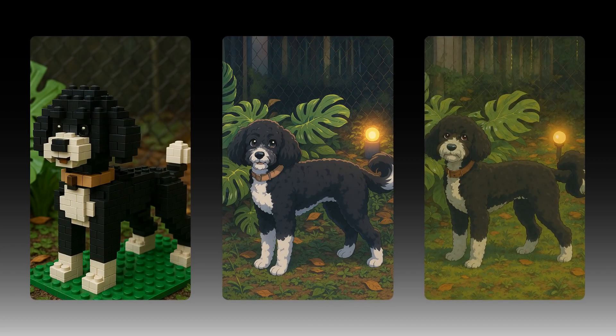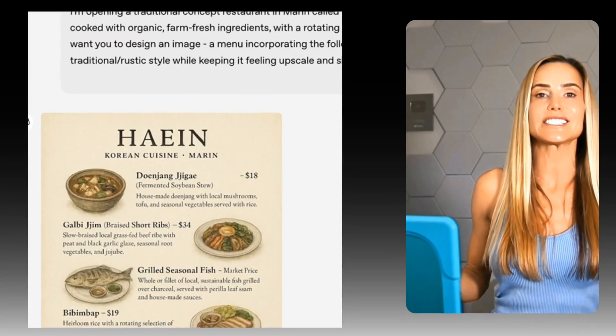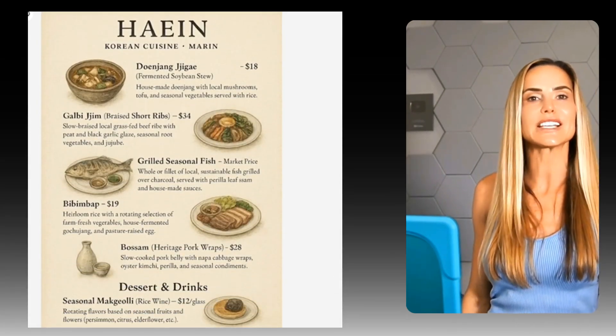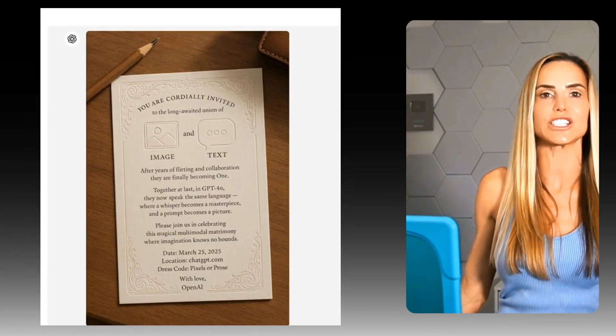You can use terms like 'make it more like the original,' 'remove the background,' or 'change the following attributes' for more precise outputs. You can even change the style of actual photos to Lego, anime, comic strip, voxel art, AI Ghibli, watercolor — you name it. You can make images transparent, create logos, or complex product designs. And thanks to advanced text rendering, you can even generate things like menus or invitations.